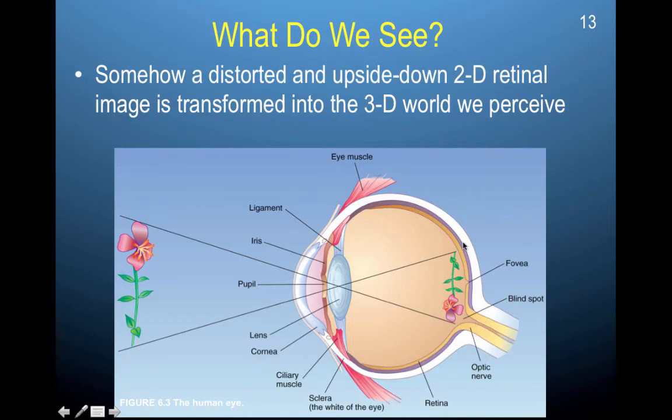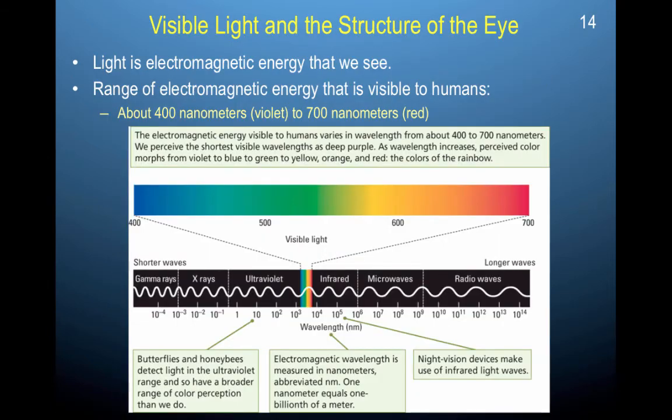Here's the optic nerve. Here's the fovea. This is a blind spot. This right here is the retina. It's this whole portion right here that goes all the way across the eye. The lens and the cornea. The lens focuses information. The cornea is what you would modify if you were having some of this eye surgery so that you don't need contact lenses anymore.